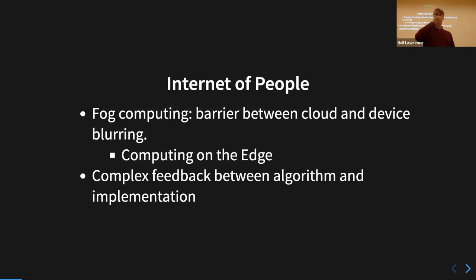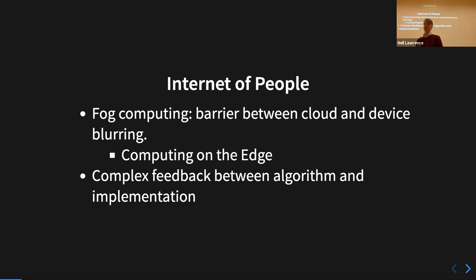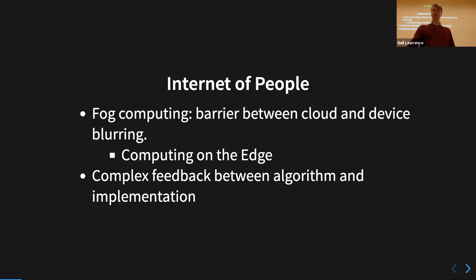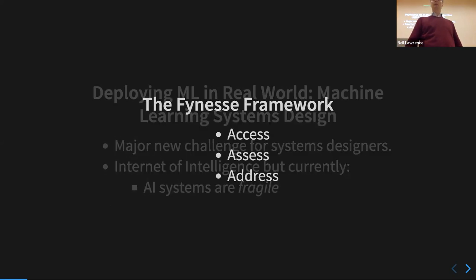This is an internet of people, not an internet of things. Particularly now, what's being called computing on the edge — people like Nick Lane in the department are very interested in what it means as you start deploying these methods down to hardware. But as we're deploying them down to hardware, that's causing more and more data to come back to software. It's a major new challenge to deploy such systems.